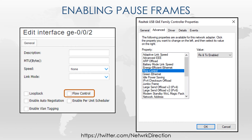We can set RX, which enables receiving pause frames, TX, which enables sending pause frames, or both. This is usually set per interface and only on full duplex interfaces. Keep in mind that some devices may not support sending pause frames — this comes down to each vendor and device.